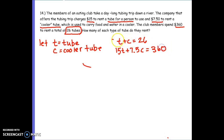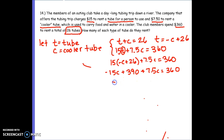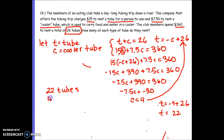We can solve for T or C — they both have a coefficient of 1. Let's solve for T: T equals negative C plus 26. Substituting in: 15 times (negative C plus 26) plus 7.5C equals 360. Distributing: negative 15C plus 390 plus 7.5C equals 360. Combining like terms: negative 7.5C plus 390 equals 360, so negative 7.5C equals negative 30, and C equals 4. For regular tubes: T equals negative 4 plus 26, which equals 22. So we have 22 regular tubes and 4 cooler tubes.